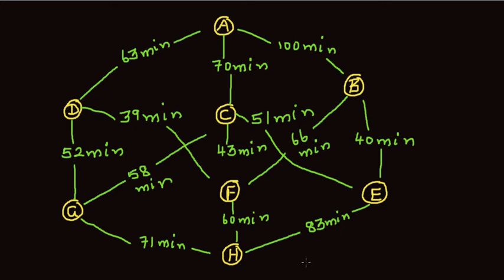In the graph shown here, this is the traveling time between different towns. If a person wants to travel from A to H, what is the shortest path from A to H with respect to time? There are different ways of doing this, but let's try a method called trace, where we try one path at a time.